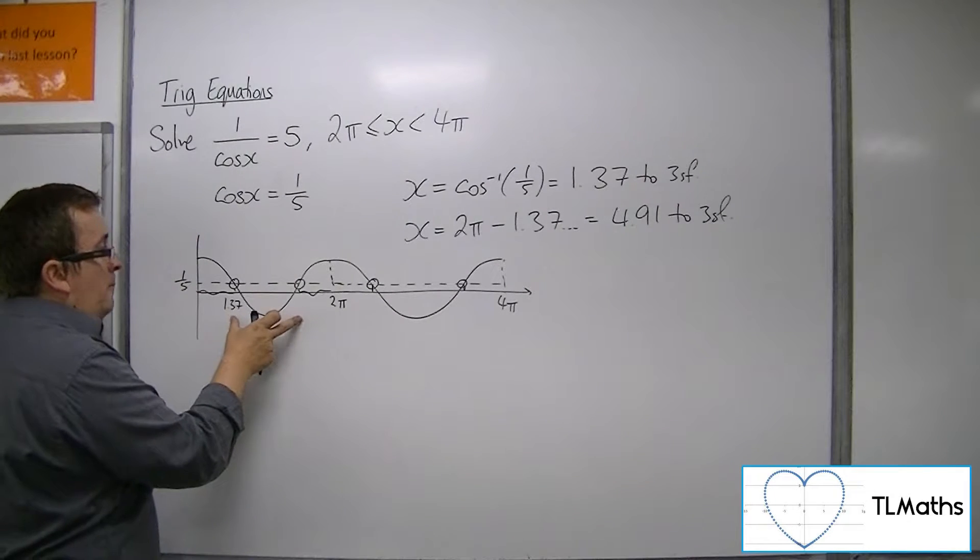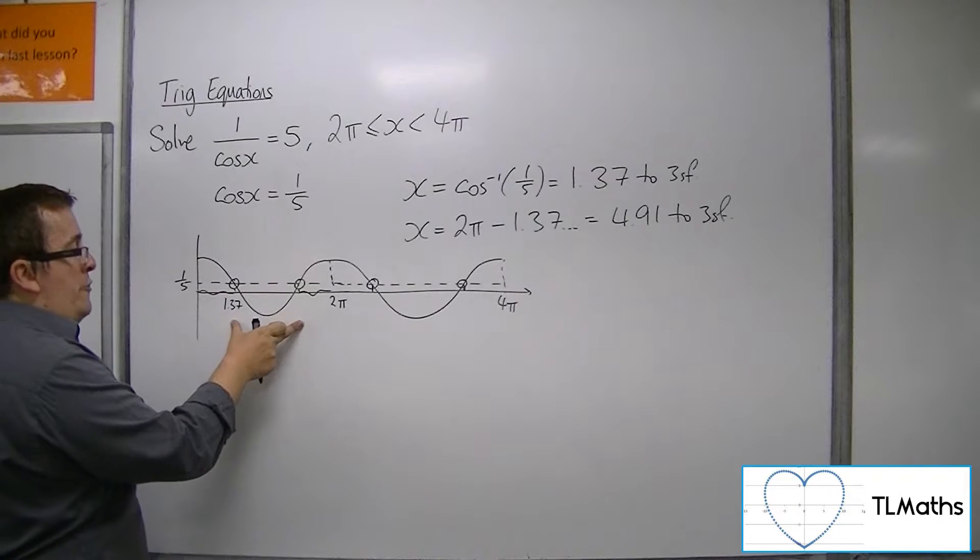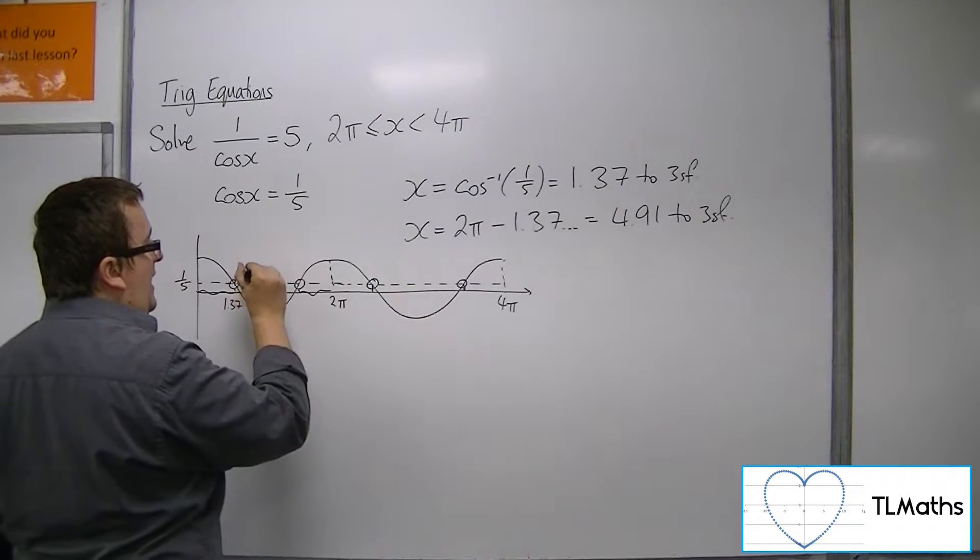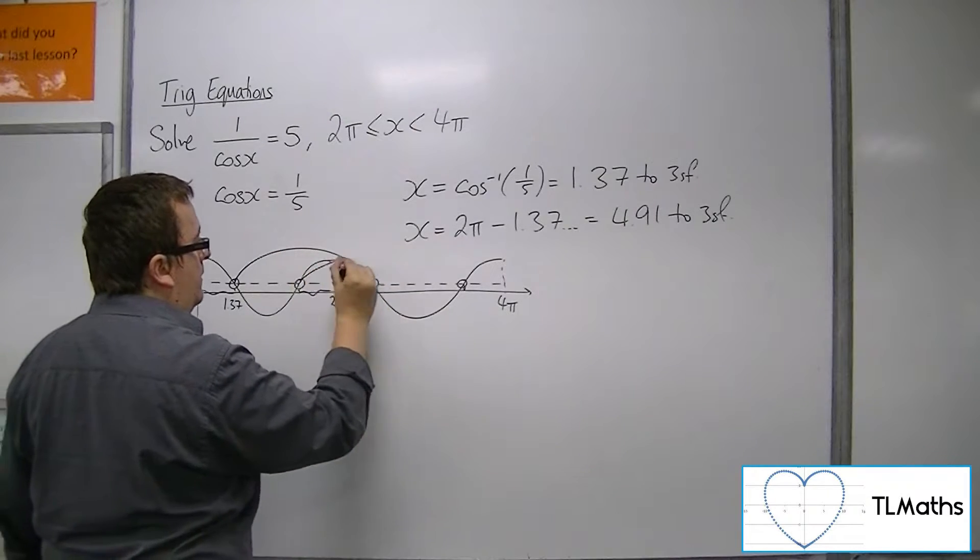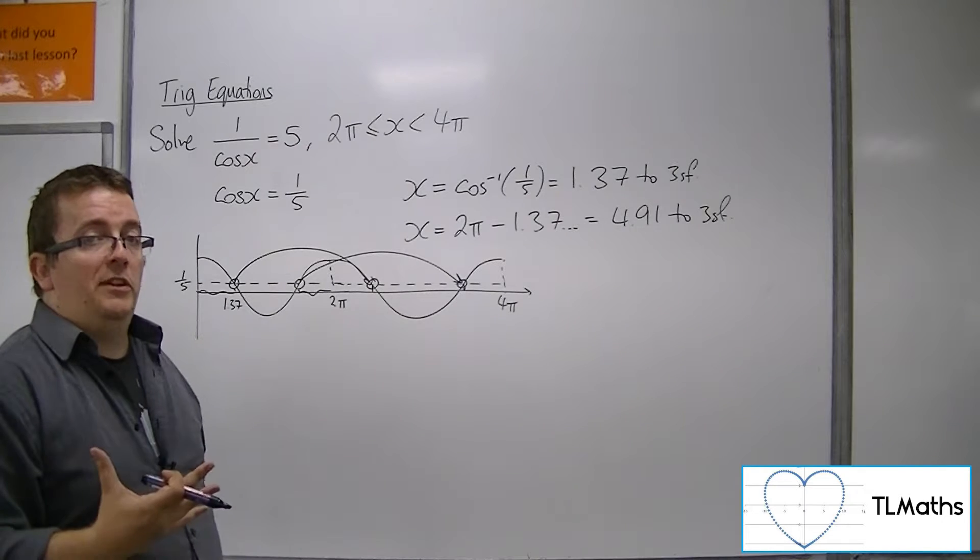Now, seeing as I've got both of those, what I can do is, knowing the period of the function of cosine is 2π, I can just add 2π onto both of those to get the two solutions that I need.